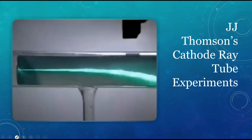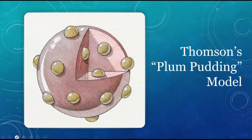The absolute charge of an electron was determined later by a scientist named Millikan, who suspended tiny drops of oil between charged plates. Thomson had established that atoms contained electrons, but nothing else was known about the structure of the atom at that time. He proposed the plum pudding model — tiny electrons were embedded in a positively charged sphere. If he hadn't been so very British, he might have called it the blueberry muffin model, where electrons are distributed like berries in a cake-like positive material.